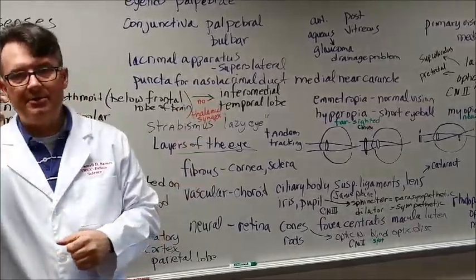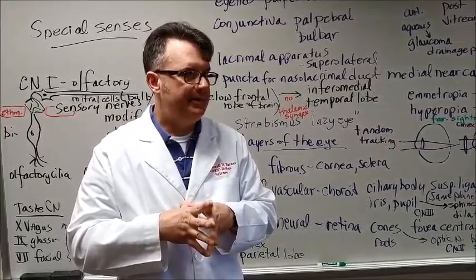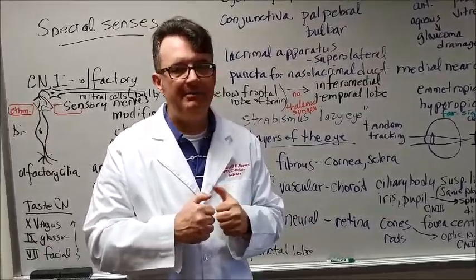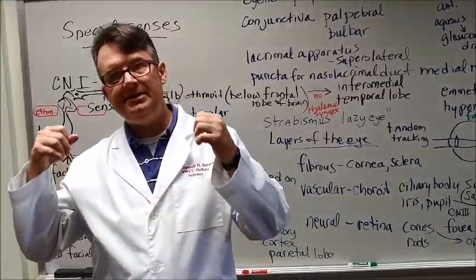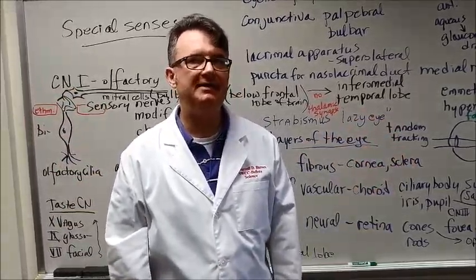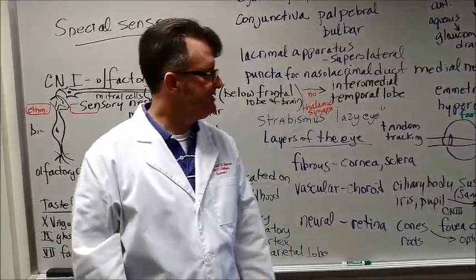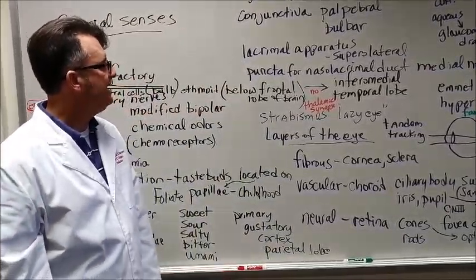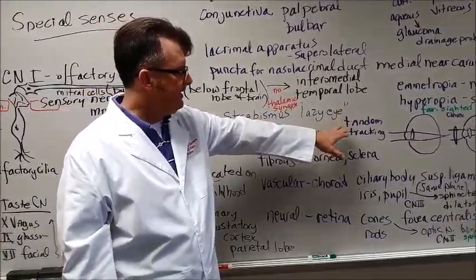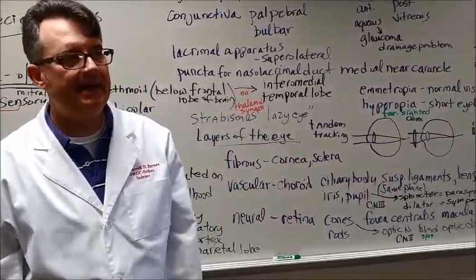And interestingly enough, if we cry, the tears drain at the caruncle, the medial feature in the eye, and go down the nasolacrimal duct and then drain into the nose under the inferior nasal concha. So it kind of helps you understand that if you're crying or emotional that your nose could start dripping or it might be that you need to blow your nose, which is not very romantic if it's an important special event. But sometimes this is an important part of life.